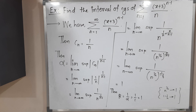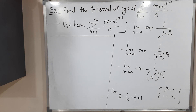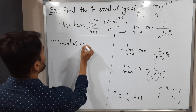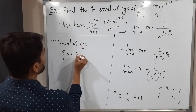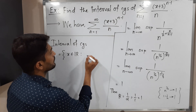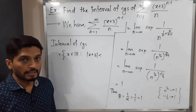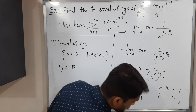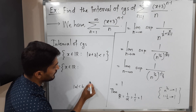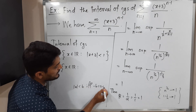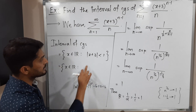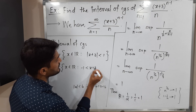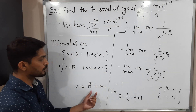Now we will find the interval of convergence. The interval of convergence is the set of all real numbers x such that the bracket (x plus 3) satisfies |x plus 3| less than the radius of convergence, which is 1. We use the result: |A| < B if and only if minus B < A < B. Here A is x plus 3 and B is 1, so we can write minus 1 less than x plus 3 less than 1.